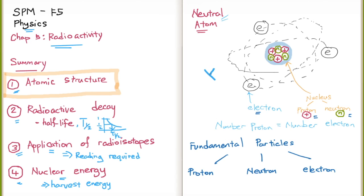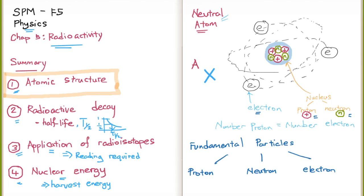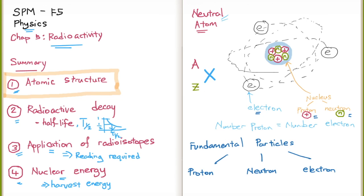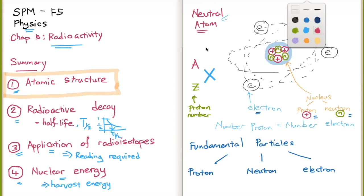Scientists have a standard way to represent any element X. In the upper left-hand corner is A, which is the nucleon number — the total number of protons and neutrons in the nucleus. In the lower left-hand corner is Z, which is the proton number — how many protons there are. So for the diagram shown, the nucleon number would be 6, and the proton number would be 3, which corresponds to lithium.